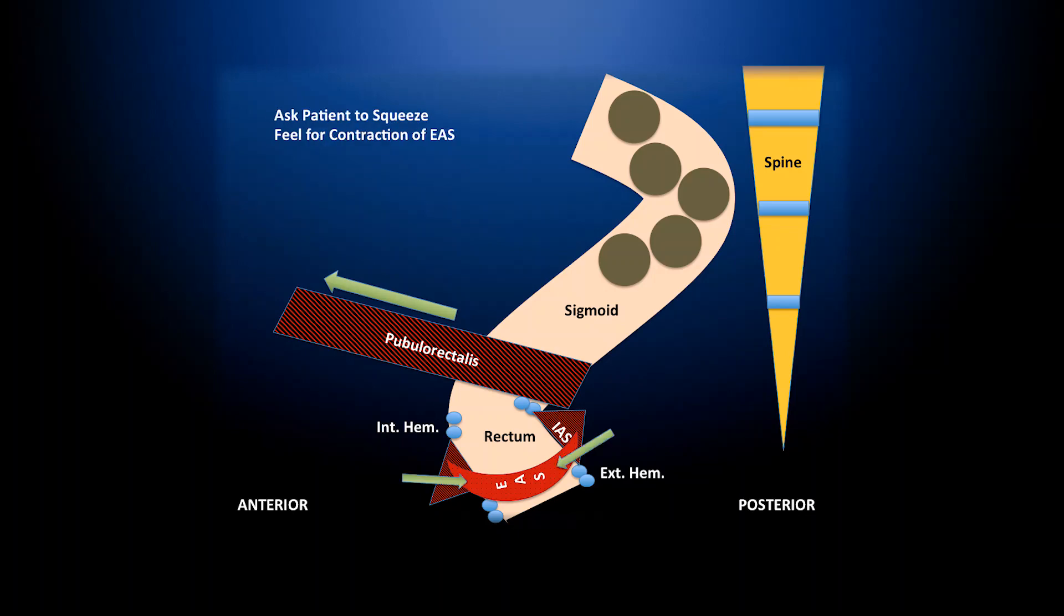The next thing we do is ask the patient to squeeze. Here what we're feeling for is contraction of the external anal sphincter against your finger. Next, we ask the patient to squeeze and hold as if they're holding a bowel movement. This is where we can palpate the puborectalis muscle. We should feel the muscle contracting and making an S shape.